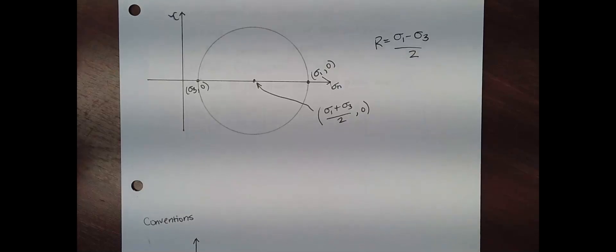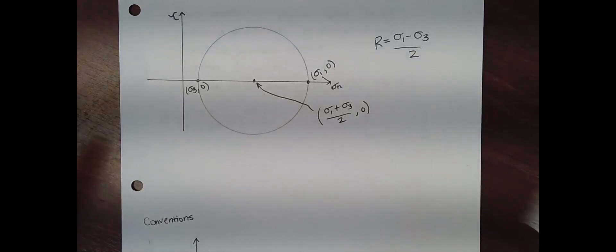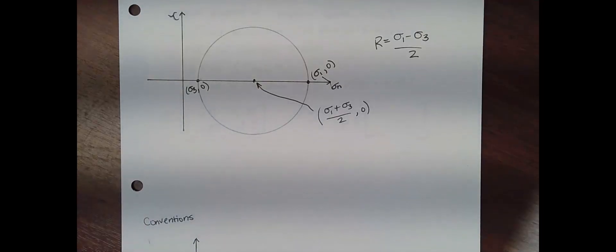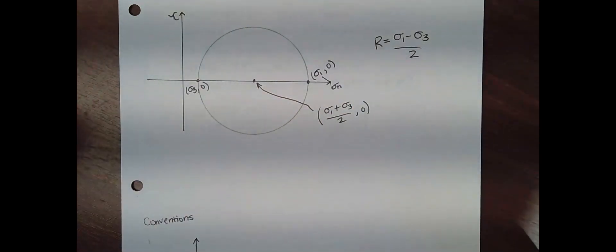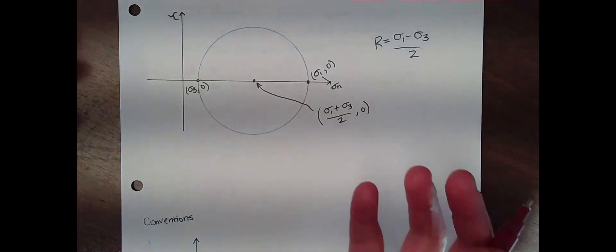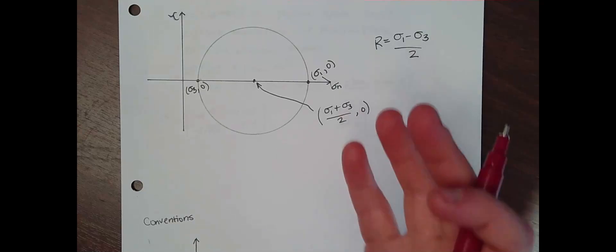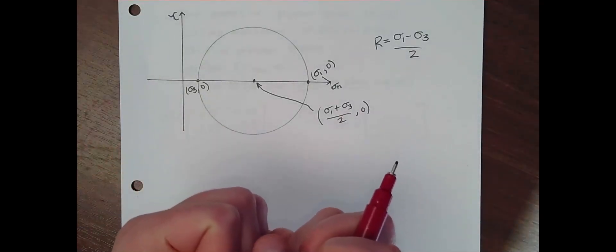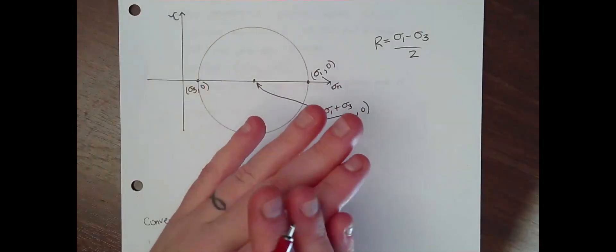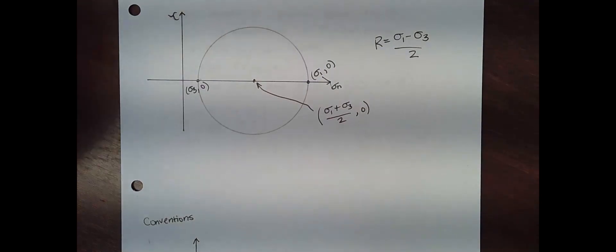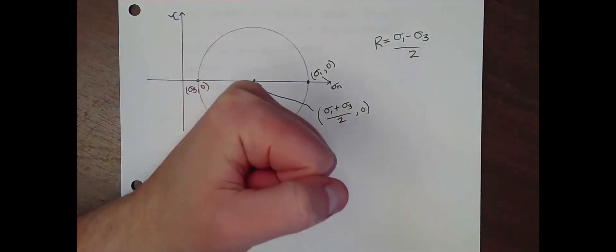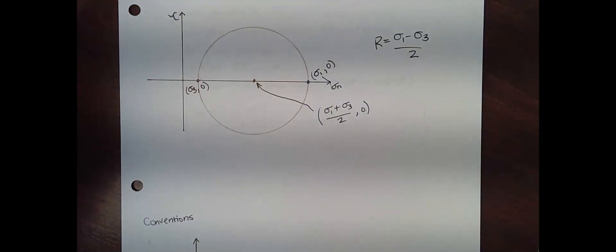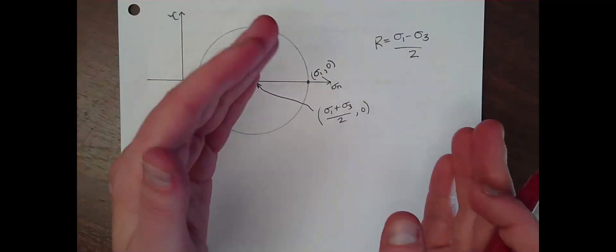The bigger this distance between Sigma 1 and Sigma 3, the more likely rock is to fail. Conceptually: a rock cube squeezed on all sides probably won't fail because the normal stresses confine and hold it together. But if you don't constrain it on the sides and just smash it from the top, it's more likely to shatter — not necessarily because of how hard you hit it, but because there's no support from the sides. It's the difference between those stresses that matters.